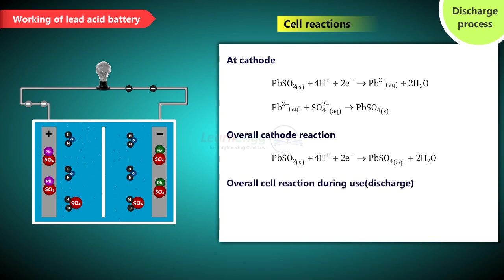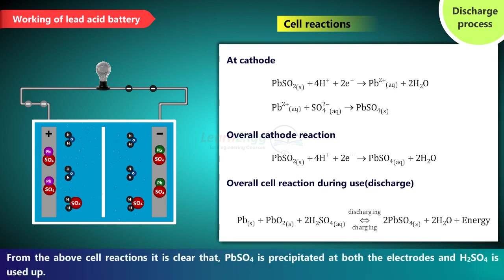Overall cell reaction during use i.e. discharge. From the above cell reactions it is clear that PbSO4 is precipitated at both the electrodes and H2SO4 is used up.